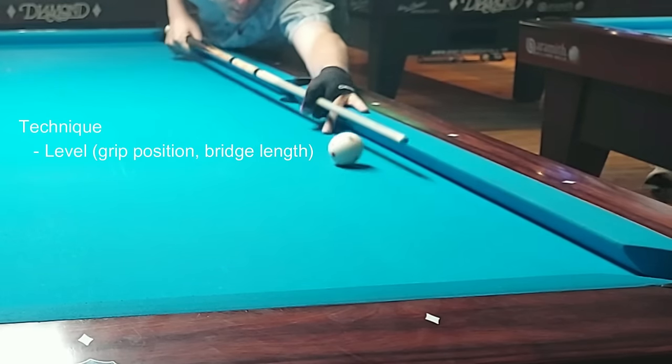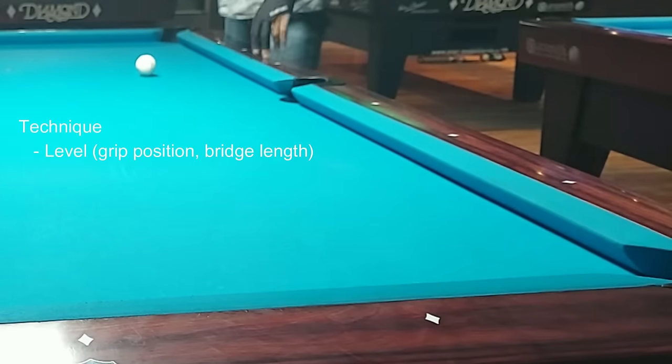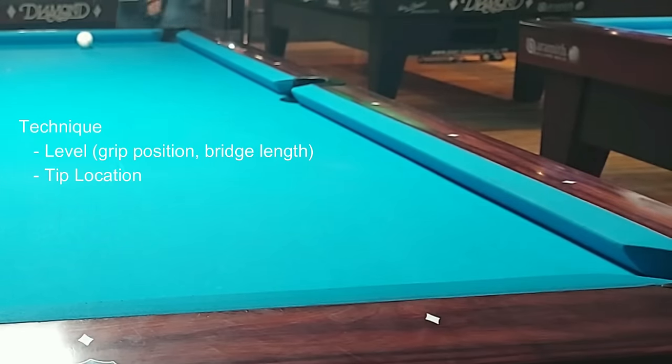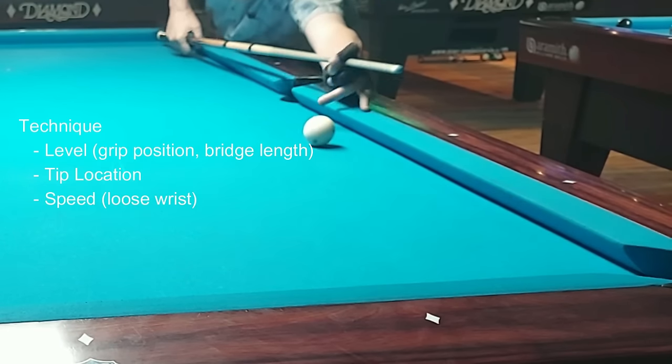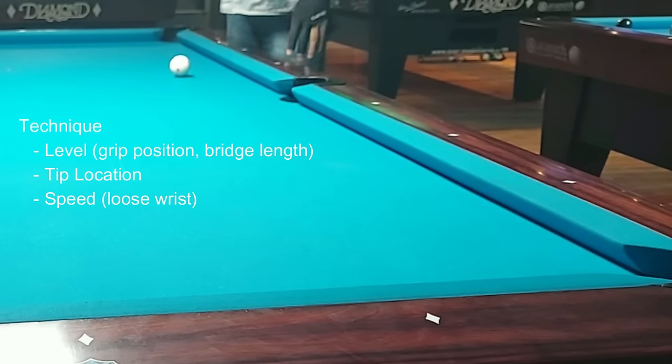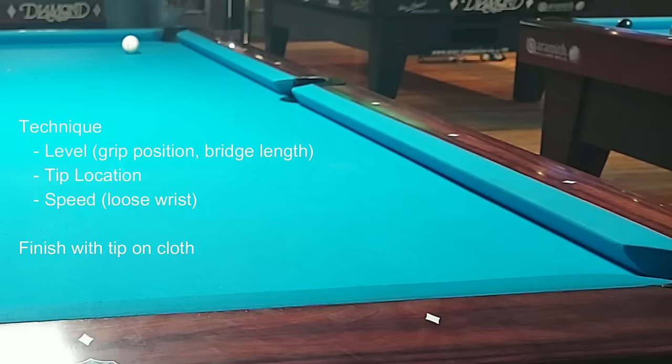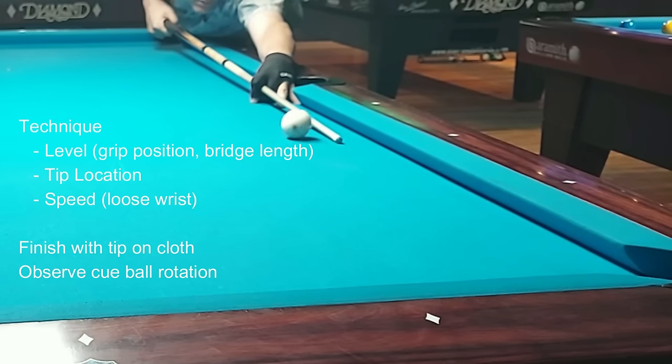Your levelness of cue is dictated by your grip position and associated bridge length, tip location both on the vertical and horizontal axis of the cue ball and speed of stroke with looseness of the wrist. Finish each stroke with your cue tip on the table as you observe the rotational energy of the cue ball.